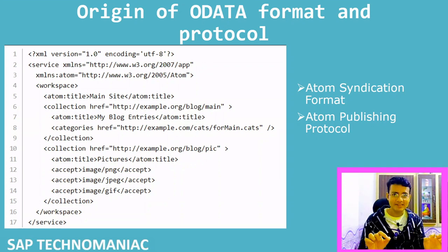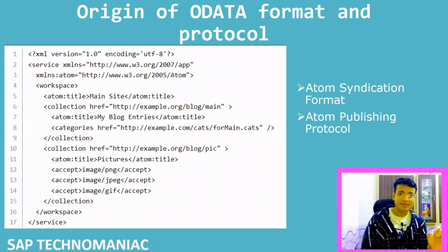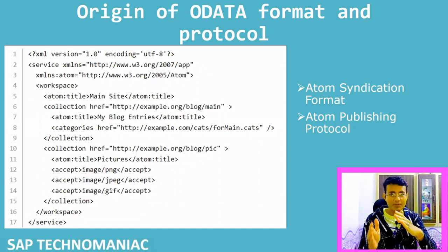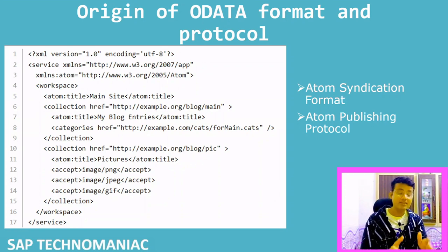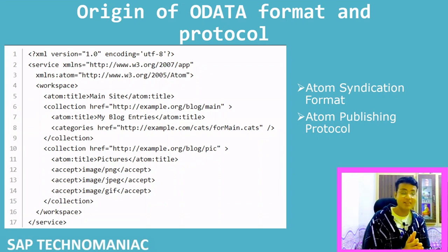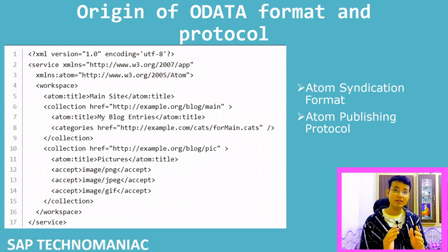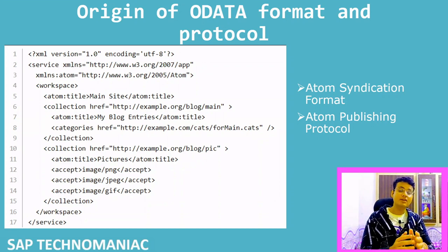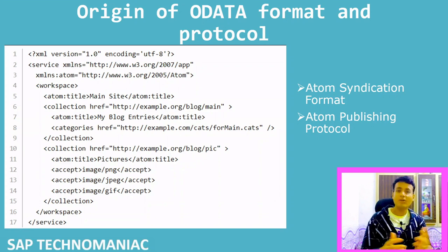ATOM is a format very similar to RSS, called the ATOM Syndication Format. It defines information in XML format and not only defines the format, but also defines a set of rules for modifying data. Those rules are defined by the ATOM Publishing Protocol, which is built on top of HTTP methods — GET, PUT, POST, and DELETE. These methods help web bloggers not only display their information but also modify, delete, or add additional information — all over the web. This is one of the formats on top of which OData is built.